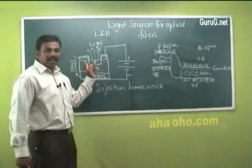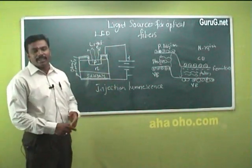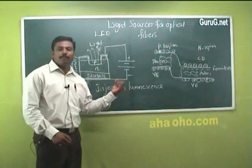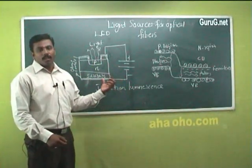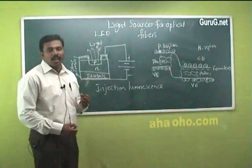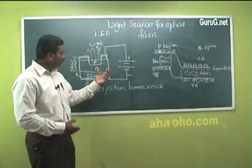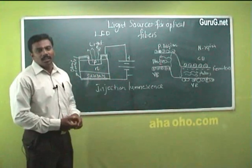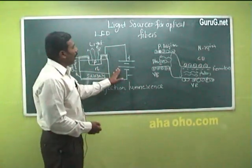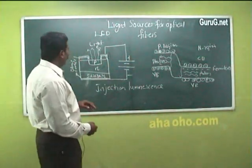Similarly, the majority carriers from the P region move to the N region, forming excess minority carriers in the N region. These minority carriers diffuse in the depletion layer and recombine with the majority carriers in the N and P regions respectively, producing light photons. This is how light photons are produced using an LED.